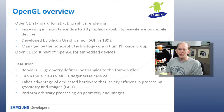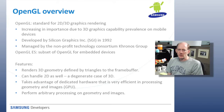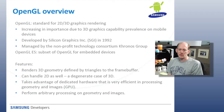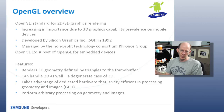OpenGL, to give an overview, is a standard for rendering 2D and 3D graphics. It's becoming increasingly important due to 3D graphics capabilities that are prevalent on mobile devices more and more now. It was originally developed by Silicon Graphics back in 1992. Silicon Graphics was extremely well-known for their graphics hardware. It currently is managed by a non-profit technology consortium called the Khronos Group. On the phone, we actually have typically OpenGL-ES, which is for embedded systems.